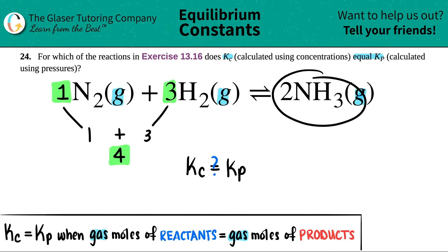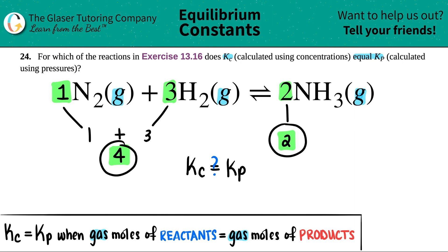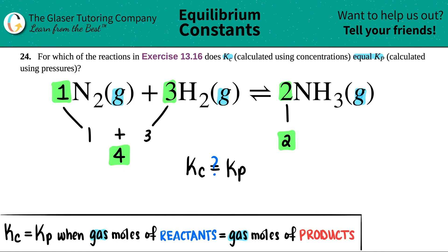Let's see how many moles of gas I have on my product side. I only have one product. There's a two in front of NH3, which means I have two moles. No addition here because I only have NH3. So I got four moles of gas on the reactant side, and two moles of gas on the product side.